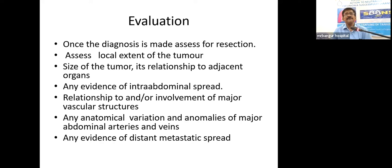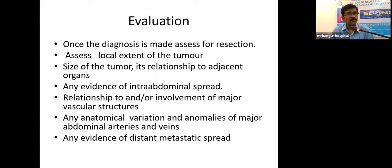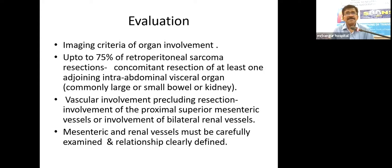Ten percent of patients present with metastatic disease — lung metastasis (chest pain, cough, hemoptysis, breathlessness) or liver metastasis (abdominal distension, jaundice). Evaluation aims to assess resectability: assess local extent, size of tumor, relation to adjacent organs, intra-abdominal spread, relation to major vascular structures, anatomical variations of major abdominal arteries and veins, and any evidence of distant spread.